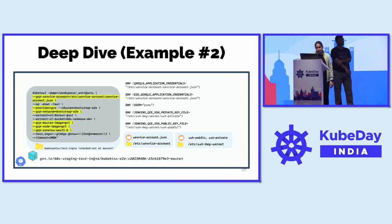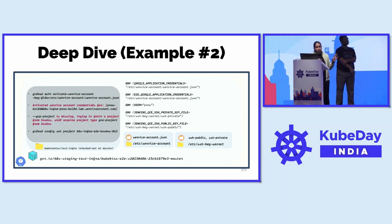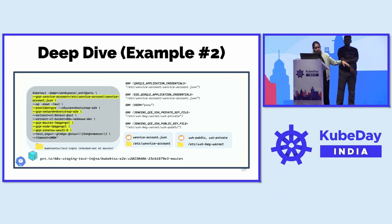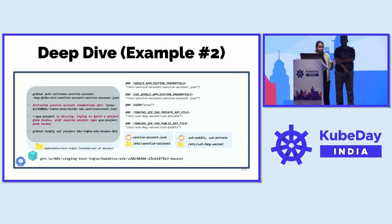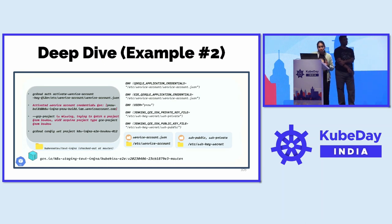Here we're telling it to use kubetest2 with the GCP service account to interact with the GCP cluster, and to use the provider GCE — meaning bring up a cluster in Google Cloud Platform. We give it other settings like GCP network, master images, zones, etc. The service account is used to authenticate with gcloud. You'll notice there's no GCP project flag — that information comes from BossCost, the lease management tool Jason introduced earlier. Whenever we're running these jobs inside Prow, BossCost dynamically provides access to these cloud resources, so kubetest2 will request a GCP project from BossCost.